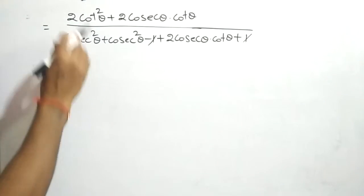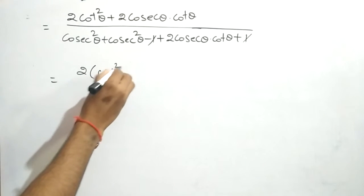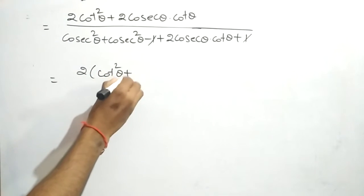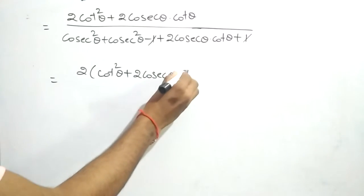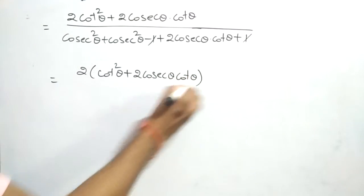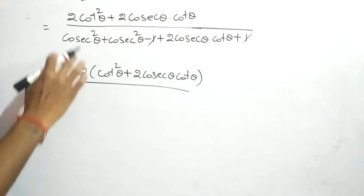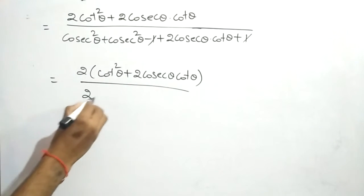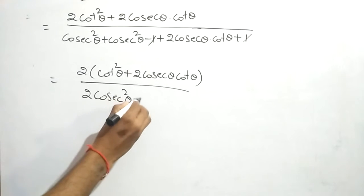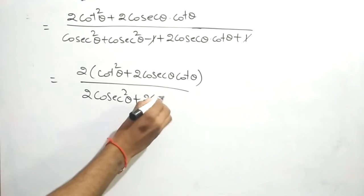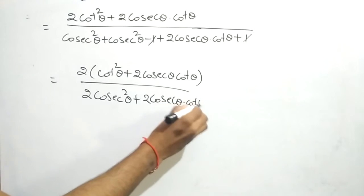In both terms 2 is common. The numerator is 2cot²θ + 2cosecθ·cotθ and the denominator is 2cosec²θ + 2cosecθ·cotθ.